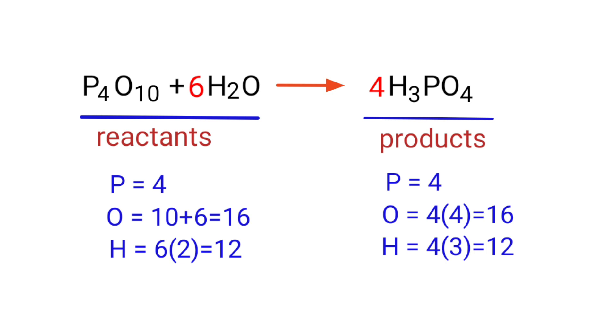The equation is now balanced. There are 4 phosphorous atoms, 16 oxygen atoms, and 12 hydrogen atoms on both sides.